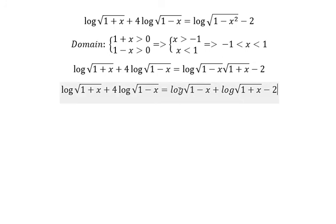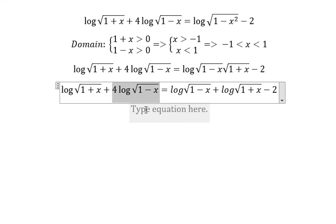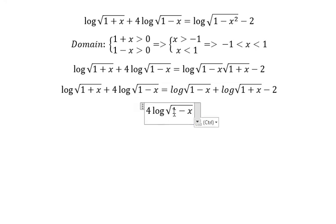So we have this one and this one. We can cancel together. And now we just have 4 log of the square root 1 minus x. And in here, we have another log, so that's about number 3, and we have negative 2.